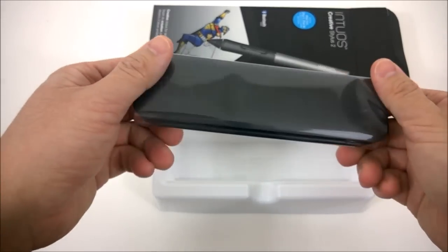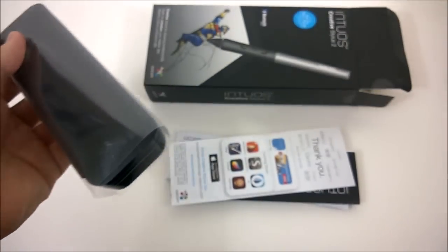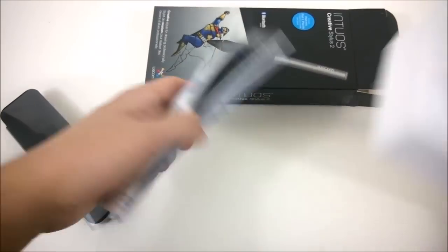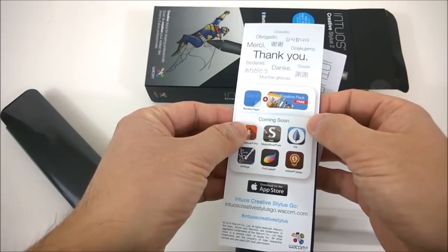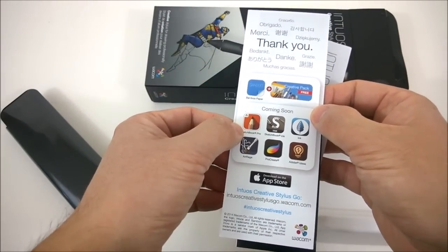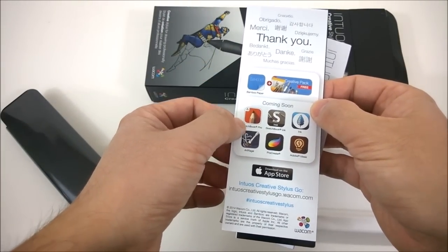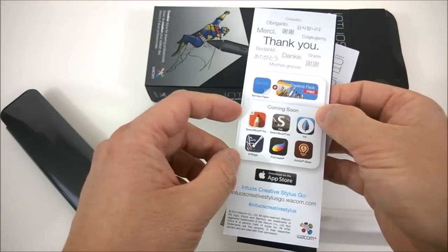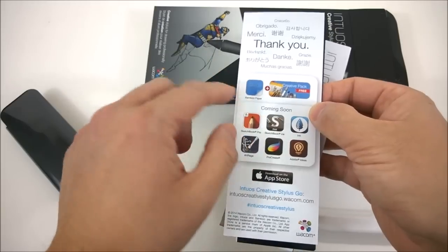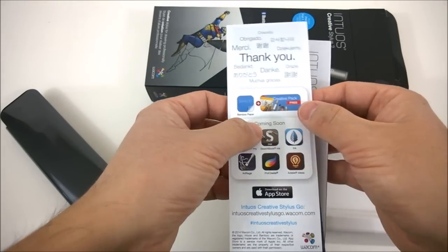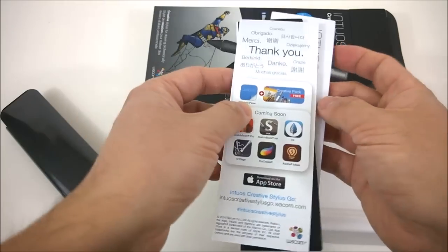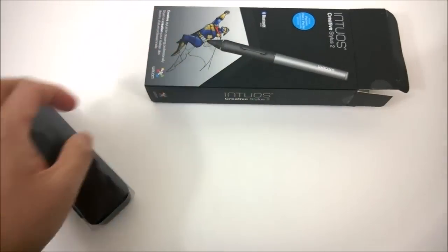So you can see you get this nice little carrying case with it. And below this we have all the warranty information and FCC stuff. And this card shows what apps are coming soon, which I think some of them already support. And then of course with their Bamboo Paper application you get some additional features once the program detects it.